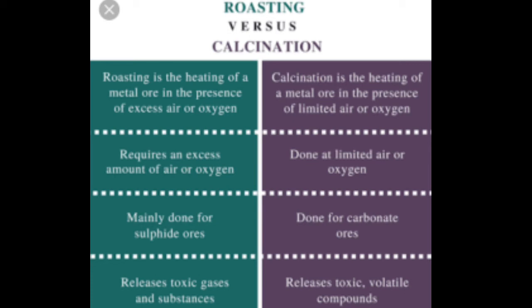जब हम carbonate ore को गरम करते हैं तो इस process को हम बोलते हैं calcination, और इसके बाद हमें oxide of metal मिल जाता है। दूसरा है हमारा sulfide ore - calcination के process से हमने carbonate ore लिया था, अब जो sulfide ore होगा वो हमें मिलेगा roasting के process से।